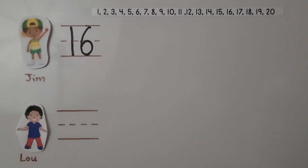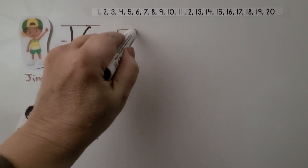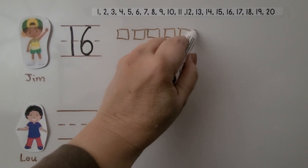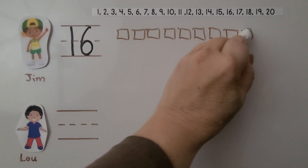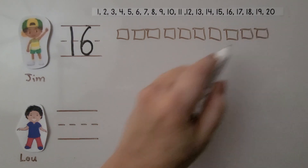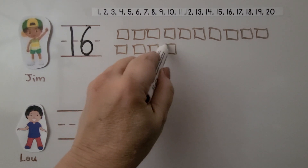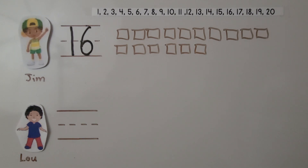Here's Jim. Jim has 16 cherries. We can use drawings of cubes to show the 16. We make 10, then count: 2, 3, 4, 5, 6, 7, 8, 9, 10, 11, 12, 13, 14, 15, 16. We make one cube for each cherry.